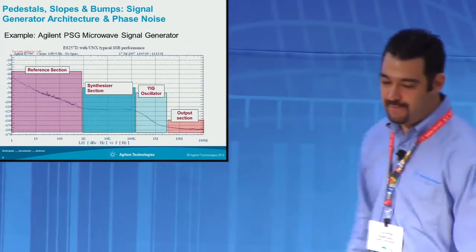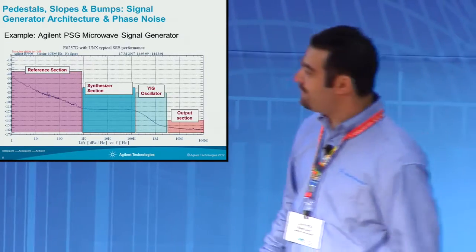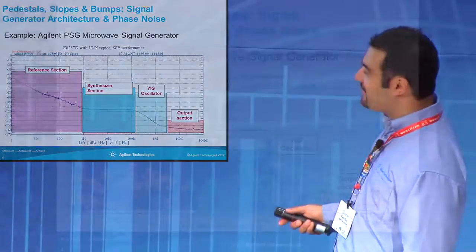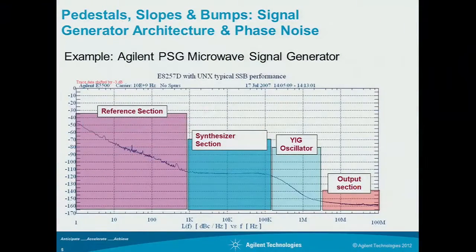Here we have our PSG signal generator phase noise plot. In these blocks are areas showing how the synthesizer actually impacts the performance of phase noise. In this first block, at ten gigahertz, between one hertz and one kilohertz offset, a lot of that phase noise performance is actually determined by your reference oscillator, either inside the instrument or external to it.